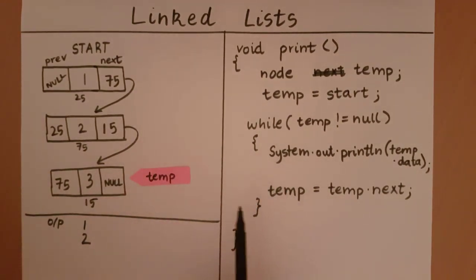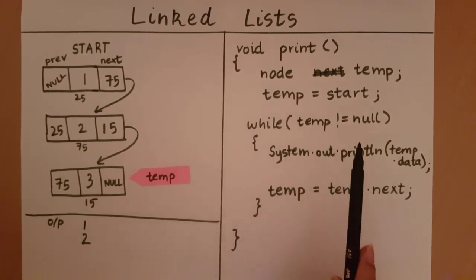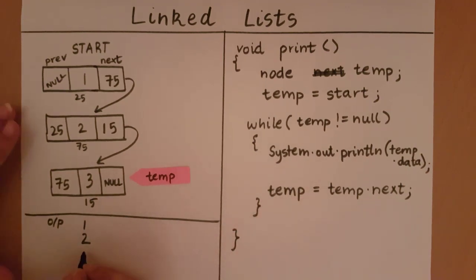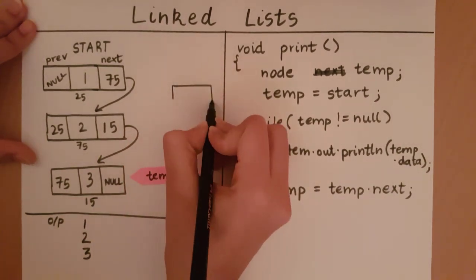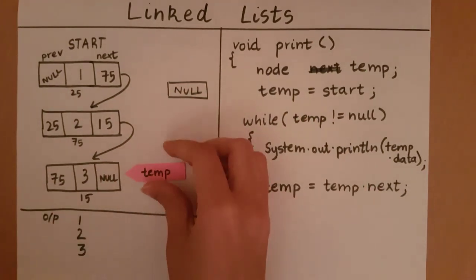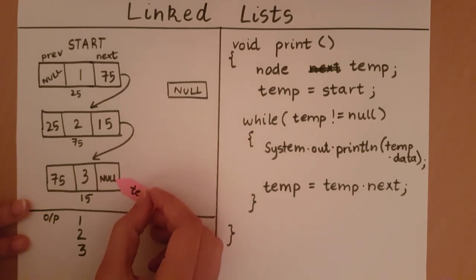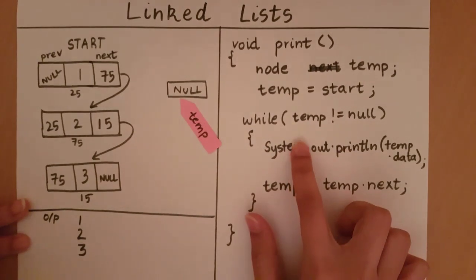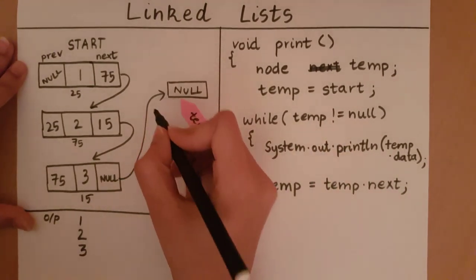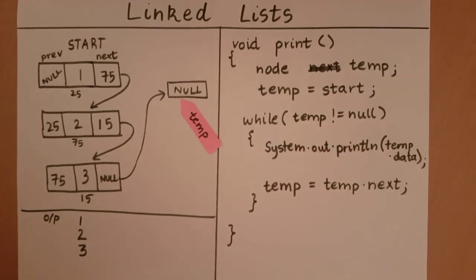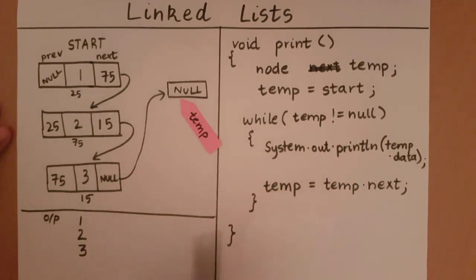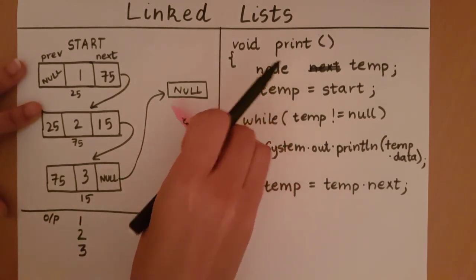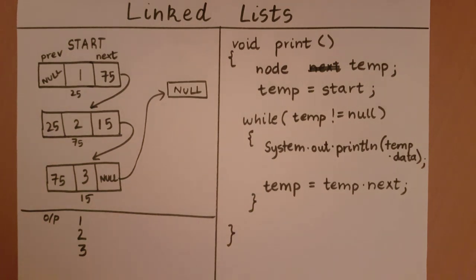So now we go back: while temp not equal to null — temp is not equal to null. We will print out the data 3 and we will say temp is equal to temp.next. Let's say we have some null memory here. So now temp is equal to temp.next, it's going to point to null temp. While temp is not equal to null — but temp is equal to null, so we are not going to execute this. We have finished printing out our list. This is how we print elements in a linked list.